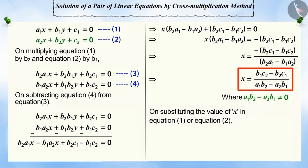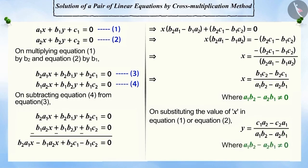Substituting this value of x in equations 1 or 2, we get y equals c1 a2 minus c2 a1 divided by a1 b2 minus b1 a2, where a1 b2 minus b1 a2 is not equal to 0.